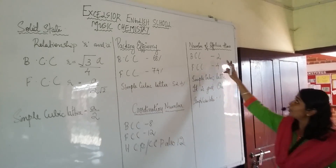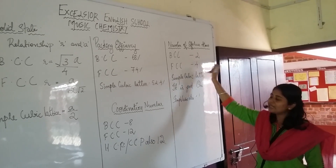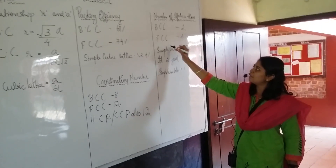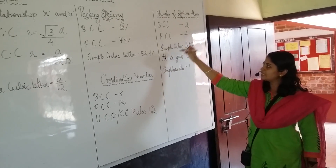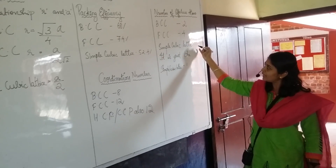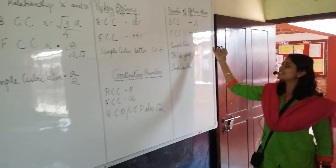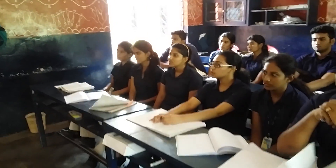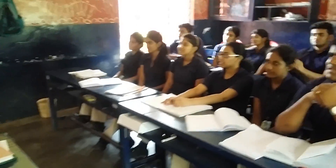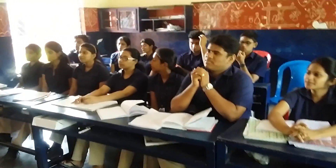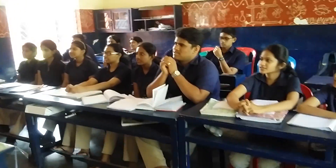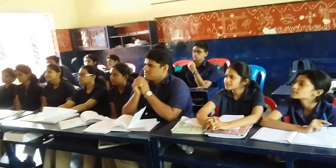Number of effective items per unit cell: BCC 2, FCC 4, simple cubic lattice 1, CCP 2.